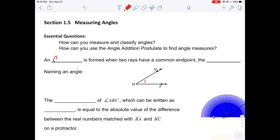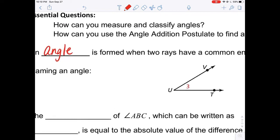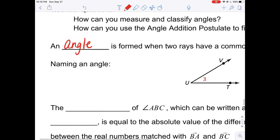Let's start by defining angle. An angle is formed when two rays have a common endpoint. That shared common endpoint is called the vertex. Here you see an example of an angle.